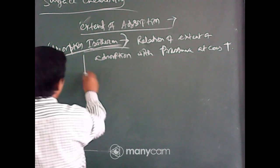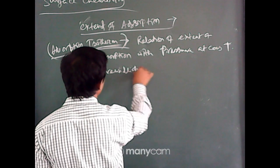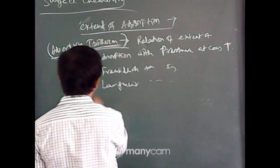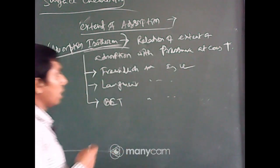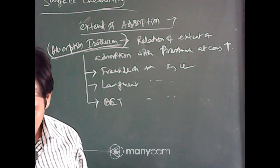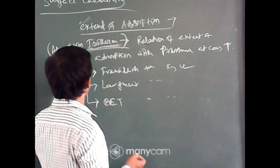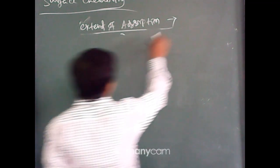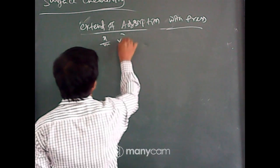Adsorption isotherms include Freundlich's adsorption isotherm, Langmuir adsorption isotherm, and BET adsorption isotherm. But in your syllabus, there is only Freundlich's adsorption isotherm. Before going to that, let us take a look at the physical aspect — the extent of adsorption with pressure, that is, the x by m versus p plot.